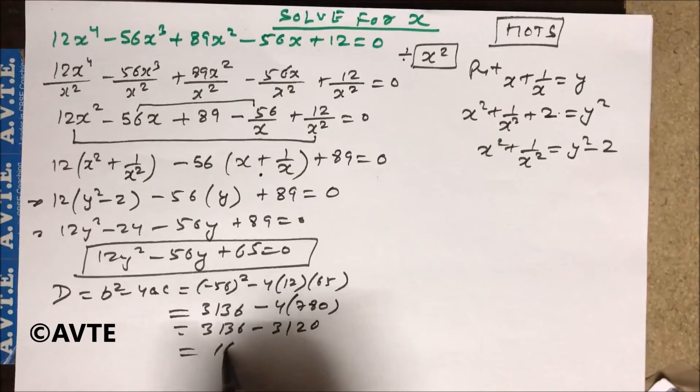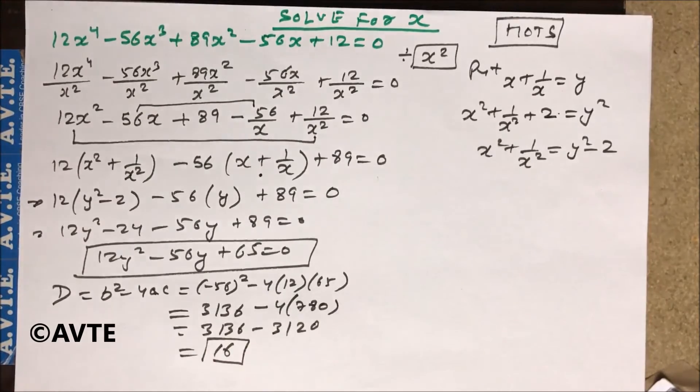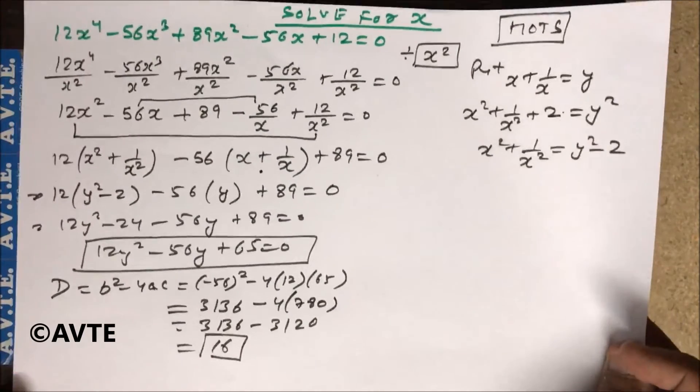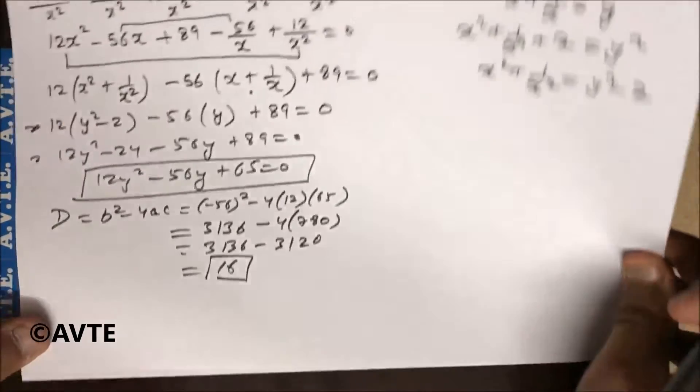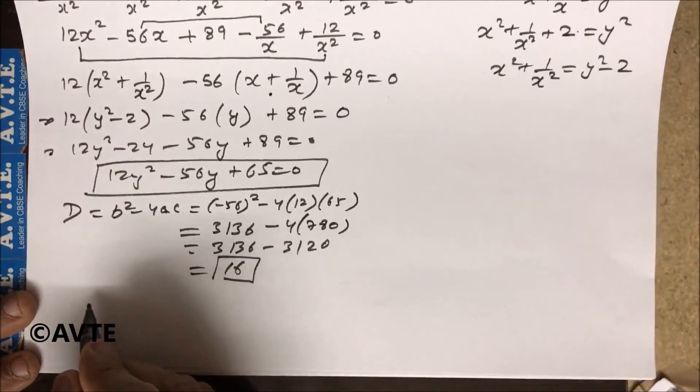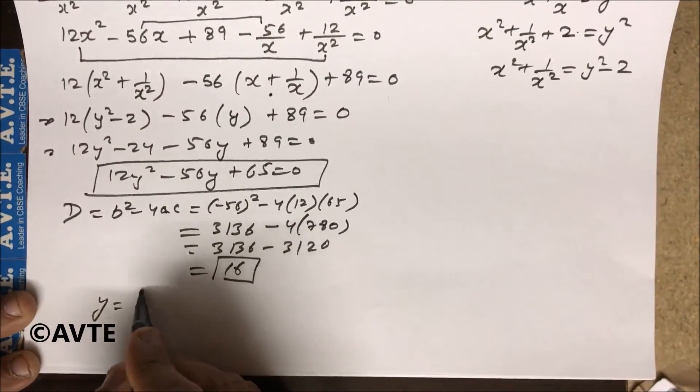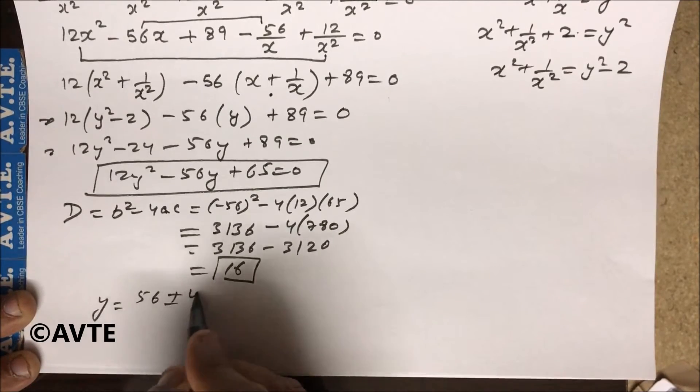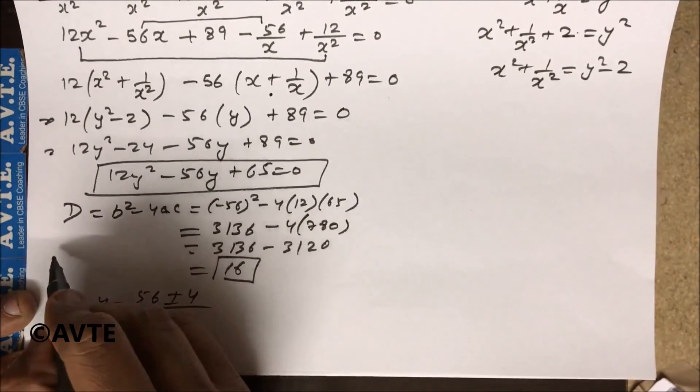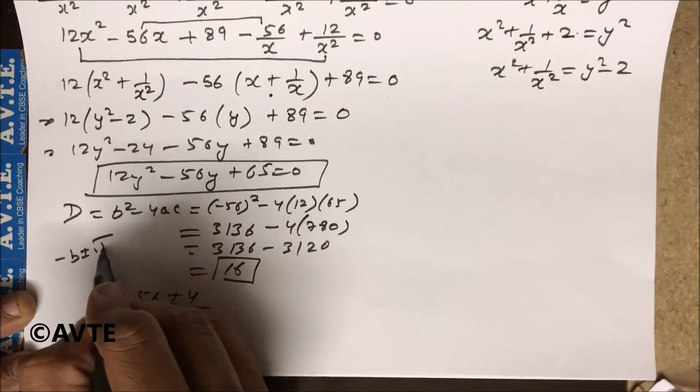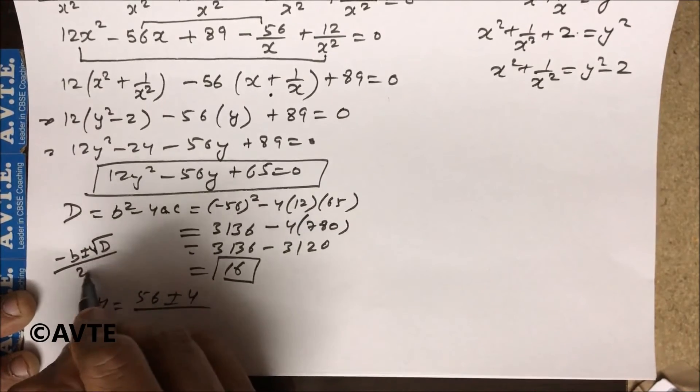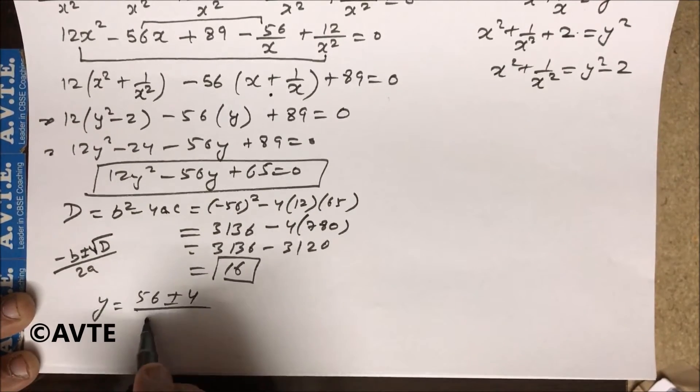3 is balanced, 3120 and 16. So your answer of getting y is 56. So your value of getting y is 56 plus minus 4 because root D upon 2a. So this is upon 24.